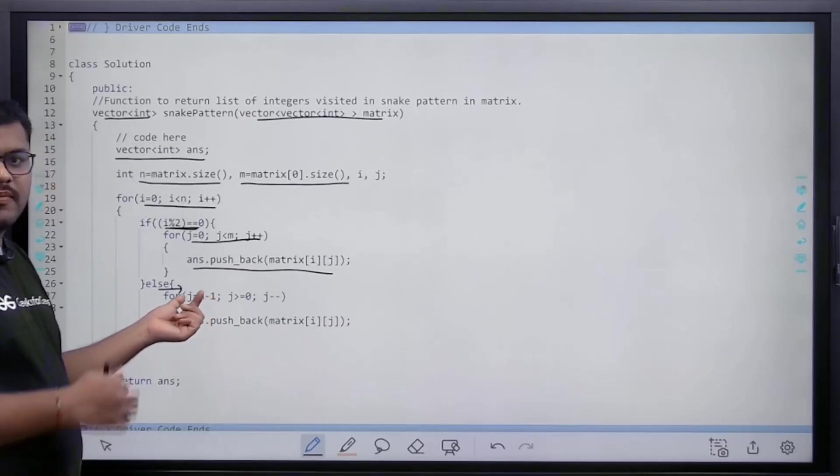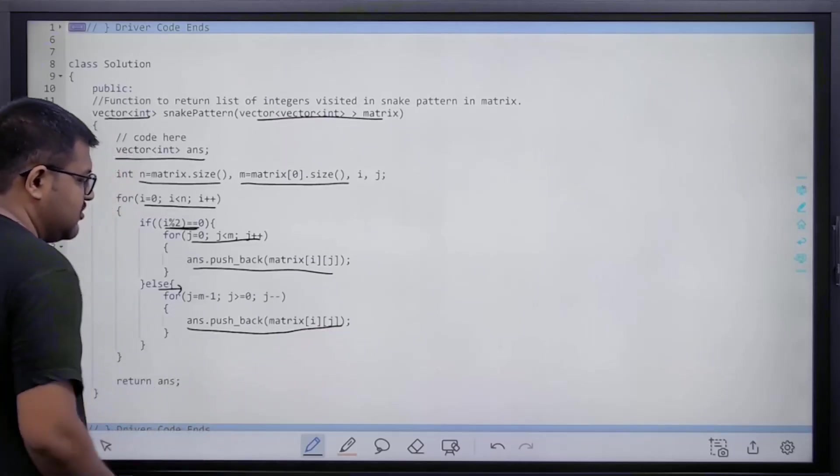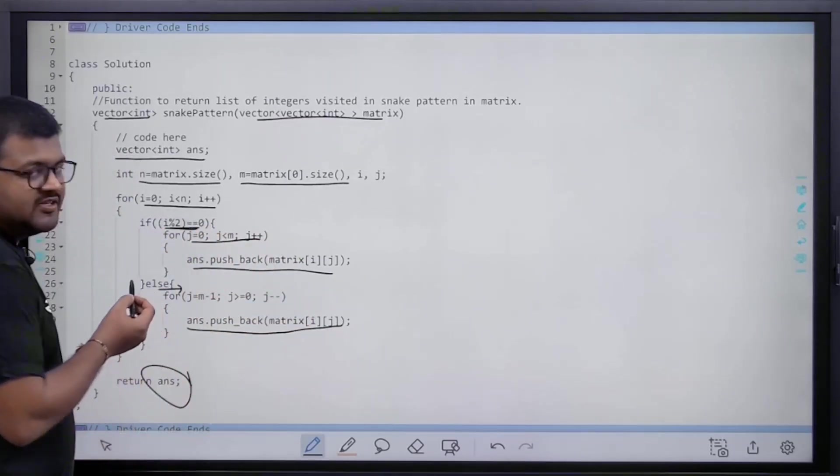I will move my column from right to left, that is m minus 1 to 0, and answer.pushback matrix[i][j]. i is the row number and j is the column number, and then I will return this answer list.